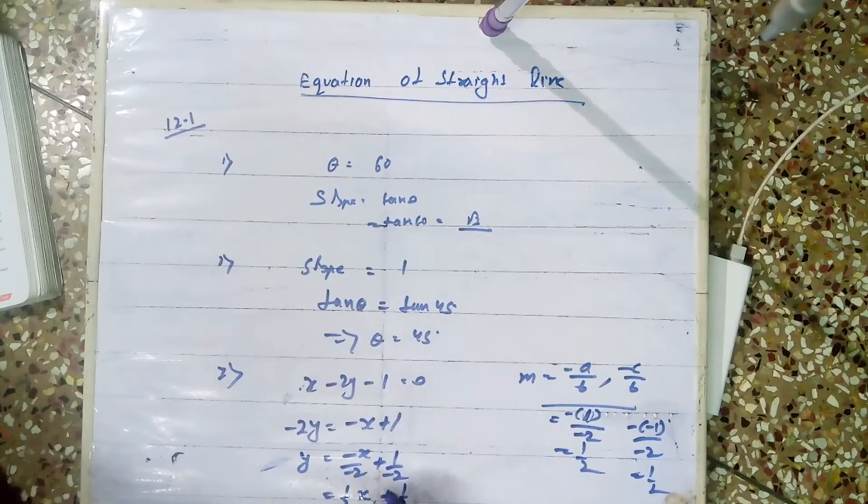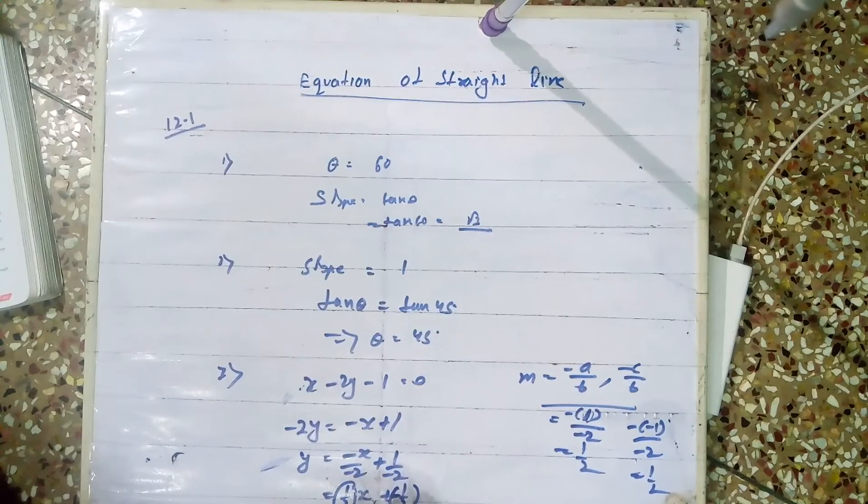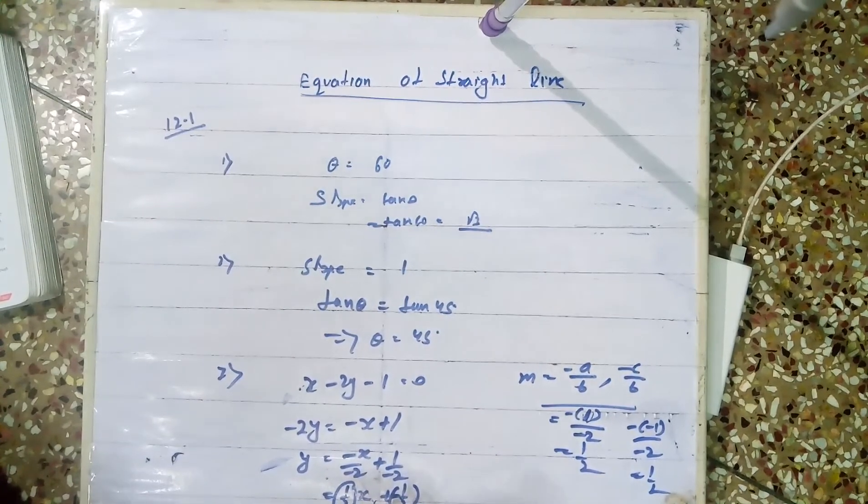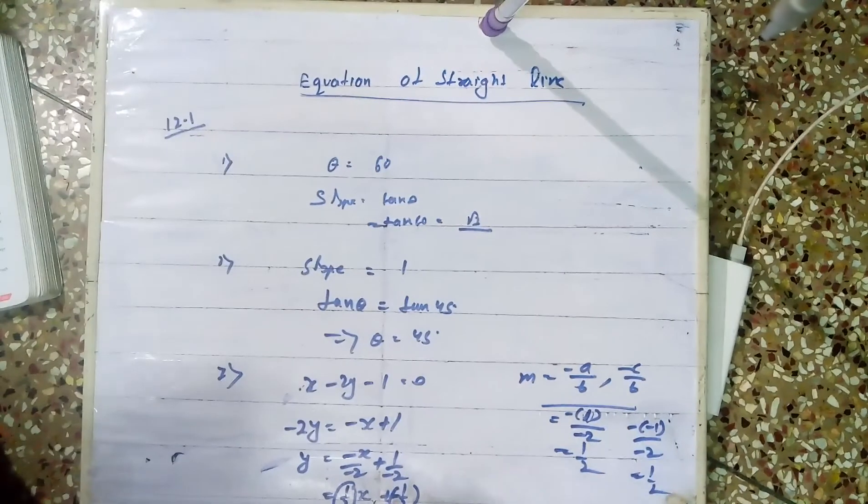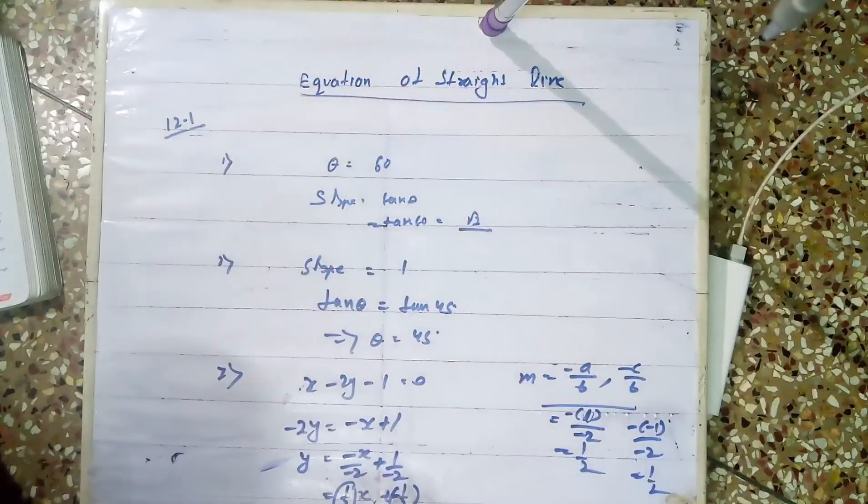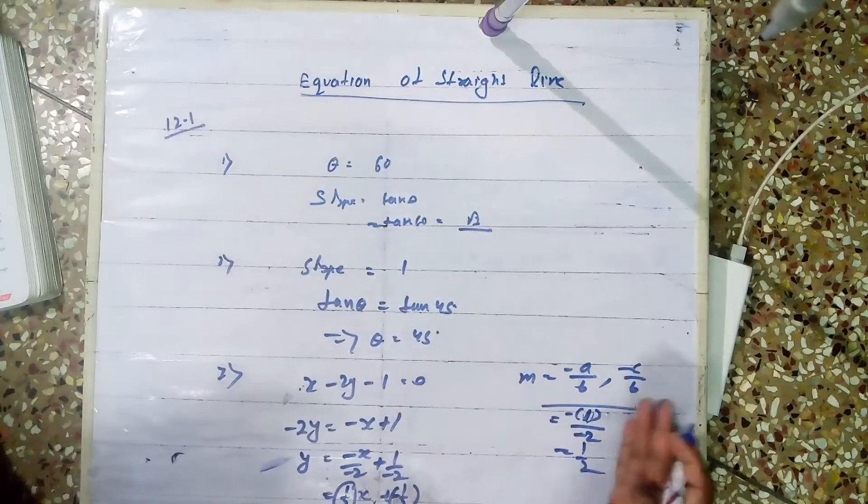So this is the slope m, and this is c, the y-intercept. Your choice now whether you apply the formula - it's the same thing. From this method only I get the formula.